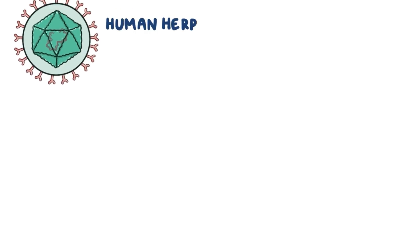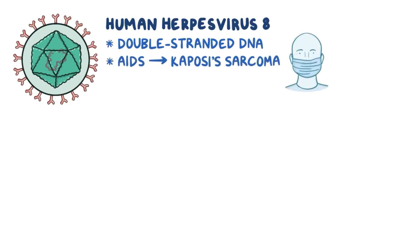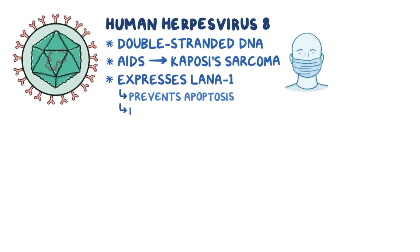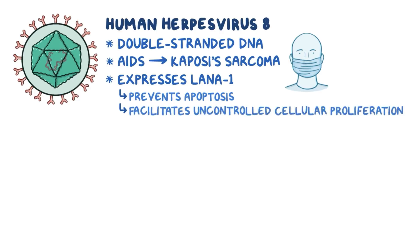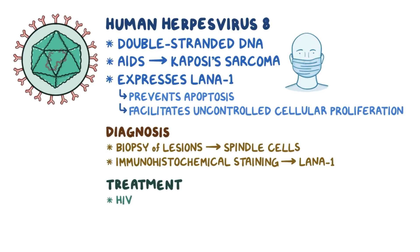As a quick recap: human herpesvirus 8 is a double-stranded DNA virus which causes a type of cancer that most commonly occurs in AIDS patients, called Kaposi's sarcoma. HHV-8 expresses a viral antigen called LANA1, which prevents apoptosis and facilitates uncontrolled cellular proliferation. Kaposi's sarcoma most commonly affects the skin, but it can also affect the mouth, GI tract, and lungs. Diagnosis is made with biopsy of lesions and microscopic examination, which can detect spindle cells, and also with immunohistochemical staining, which detects the presence of LANA1. Treatment in HIV-infected individuals is done with highly active antiretroviral therapy, or HAART, and treatment of widespread disease is done using chemotherapy.